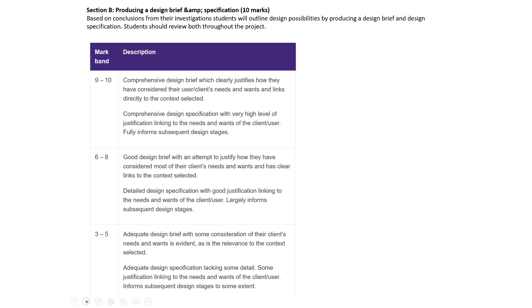Let's talk about what a nine-to-ten answer is. 'Comprehensive' means thorough and detailed; 'justified' means giving reasons why. They're focusing on user and client needs, and you should always link to the context selected — in this case, the 2018 brief about encouraging healthy lifestyles. The specification needs a high level of justification and must fully inform the subsequent design section, meaning your specification guides and helps you make decisions throughout your designing.